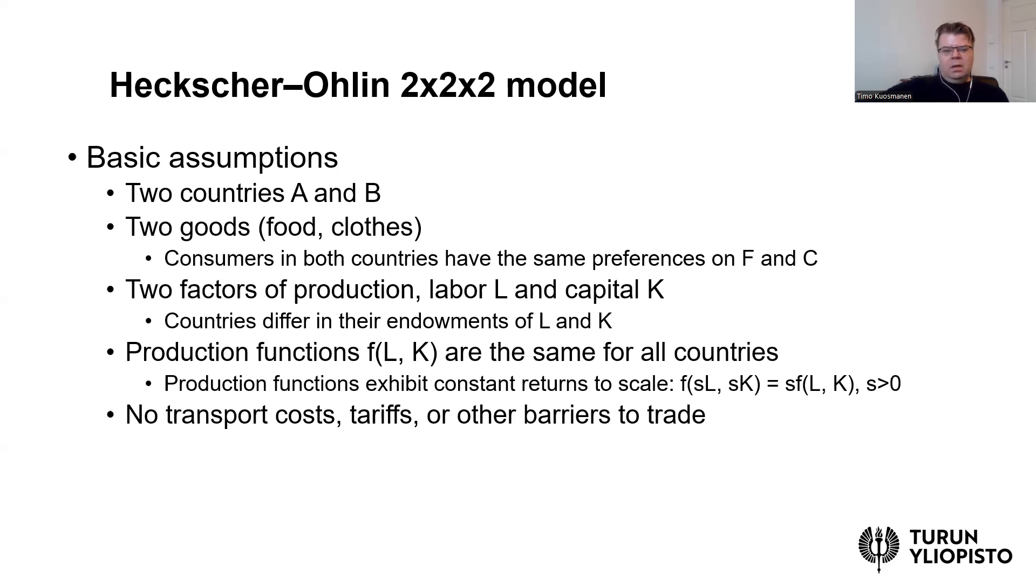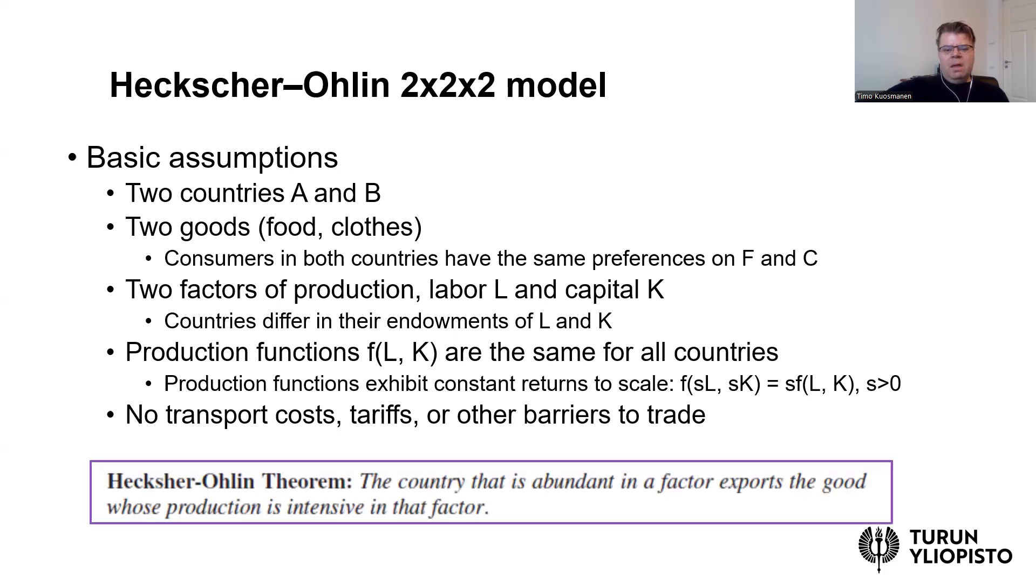So let me first come to the main result, which is known as the Heckscher-Ohlin theorem, which states that the country that is abundant in a factor exports the good whose production is intensive in that factor. So in other words, if a country is abundant in capital input, then it exports goods that are capital intensive. Conversely, if a country is abundant in labor, then it exports more labor-intensive goods. This is what the Heckscher-Ohlin theorem predicts.